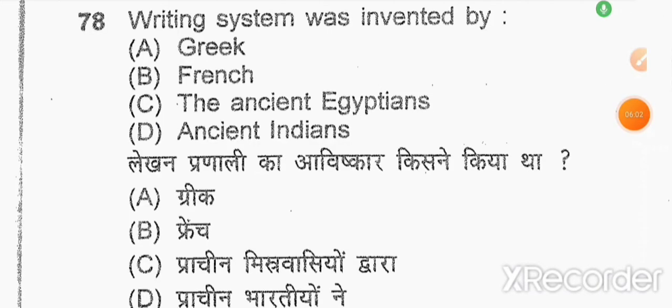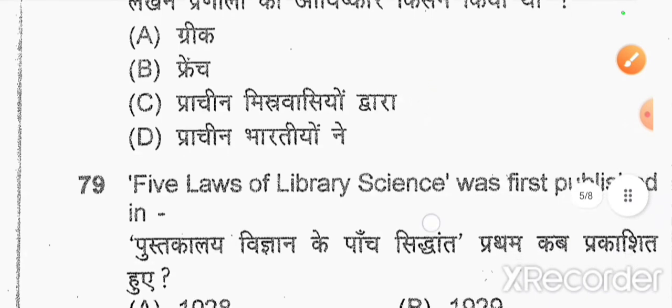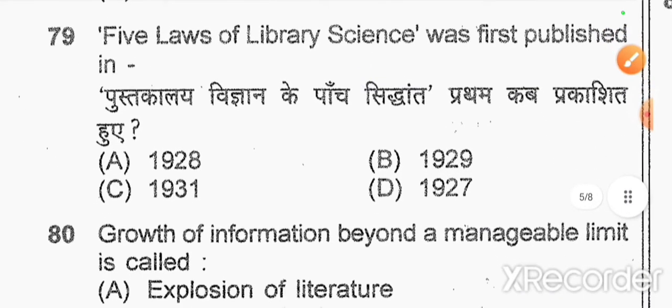Question number 78: writing system was invented by — this question is deleted. Question number 79: the five laws of library science were first published in — option C — right answer: 1931.